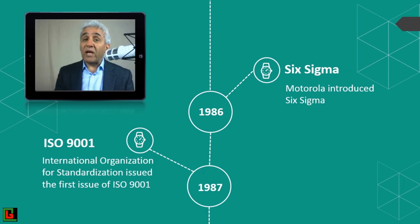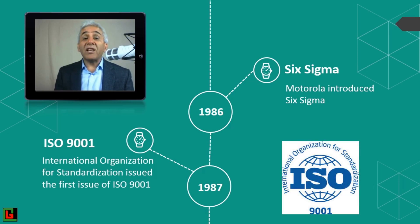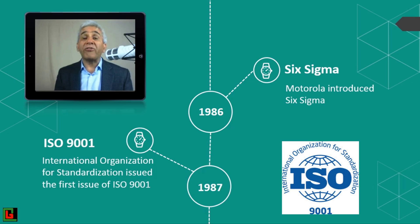In 1987, ISO 9001 was introduced for the first time. The International Organization for Standardization issued the first edition of ISO 9001 in 1987.